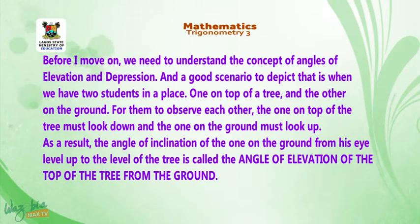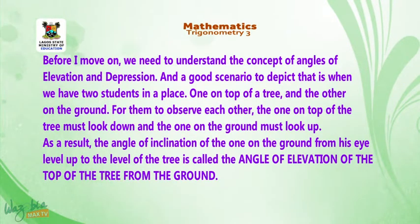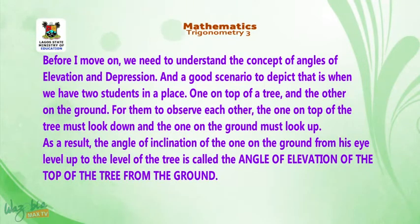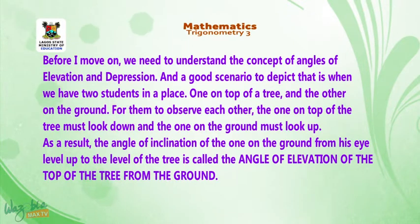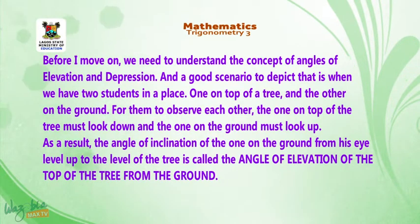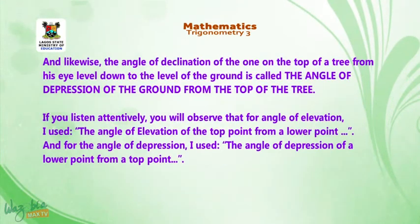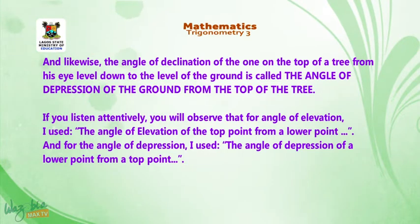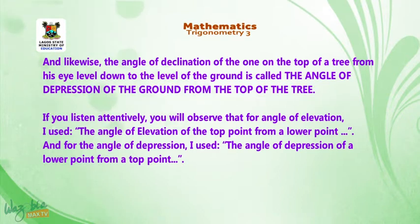A good scenario to depict that is when we have two students — one on top of a tree and the other on the ground. For them to observe each other, the one on top must look down and the one on the ground must look up. The angle of inclination of the one on the ground upward to the level of the tree is called the angle of elevation of the top of the tree from the ground. Similarly, the angle of inclination from the top of the tree downward to the ground is called the angle of depression of the ground from the top of the tree.